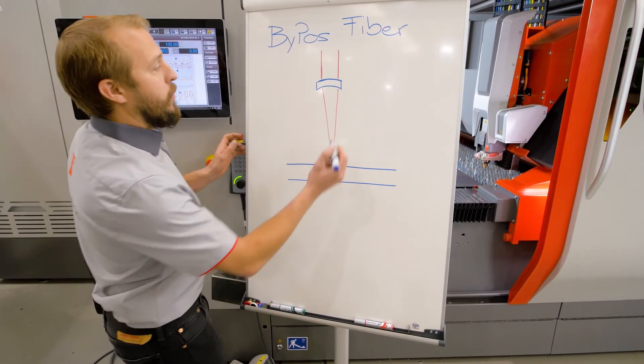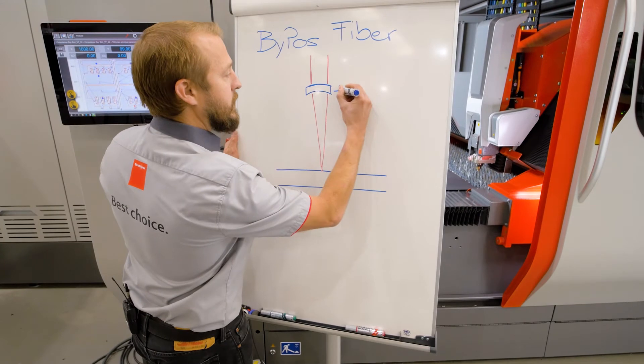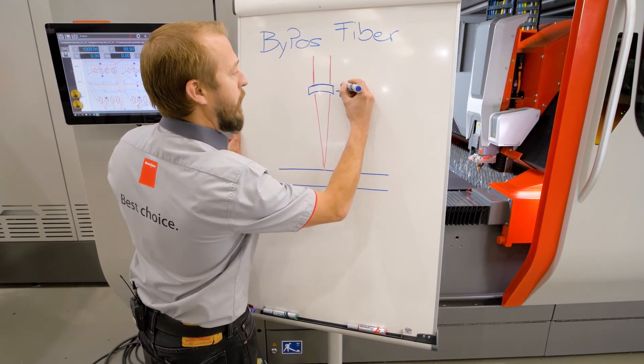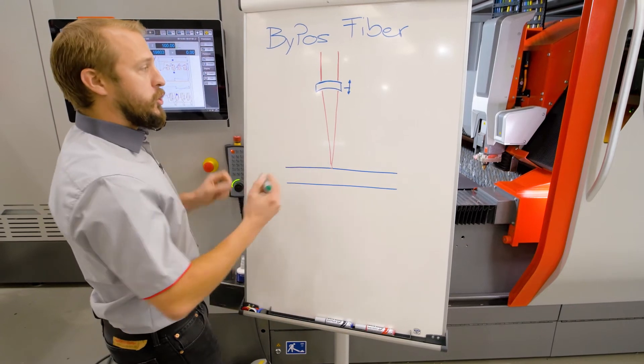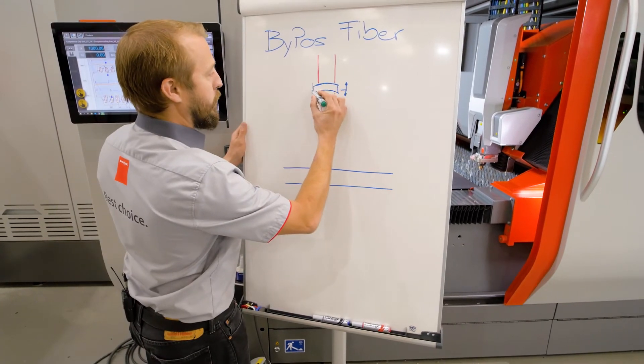So what we are doing, we are just taking this lens here, moving it up or down to a certain position to change that position of the focal point.